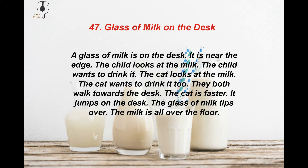A glass of milk is on the desk. It is near the edge. The child looks at the milk. The child wants to drink it. The cat looks at the milk. The cat wants to drink it too. They both walk towards the desk. The cat is faster. It jumps on the desk. The glass of milk tips over. The milk is all over the floor.